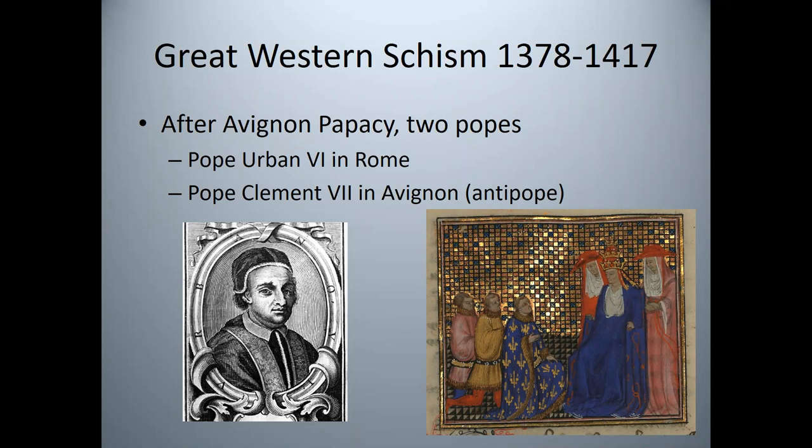At the end of this turbulent political time, Pope Urban VI was elected Pope and intended to reside in Rome, while Pope Clement VII was elected to the Avignon Papacy. The two popes excommunicated each other, and for the next 39 years there were two popes — one in Rome and one in Avignon. For a short period, there were even three popes. The Great Schism ended in 1417 with the election of one pope, Pope Martin V.